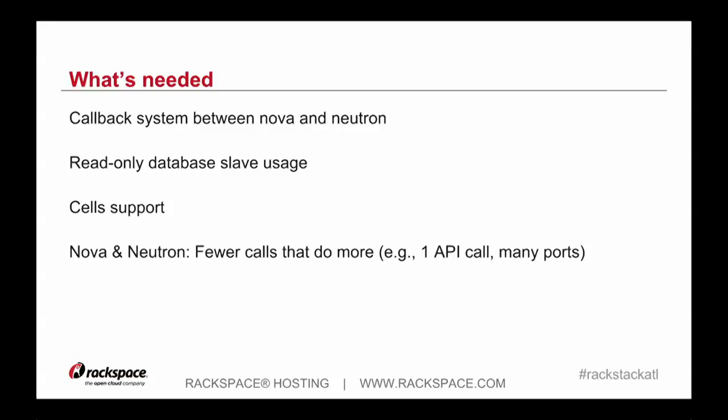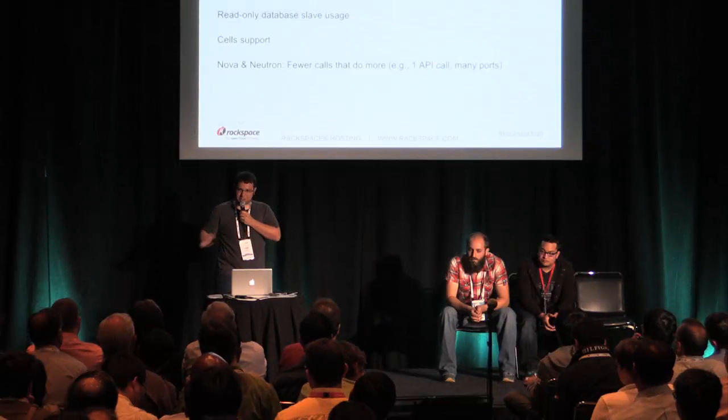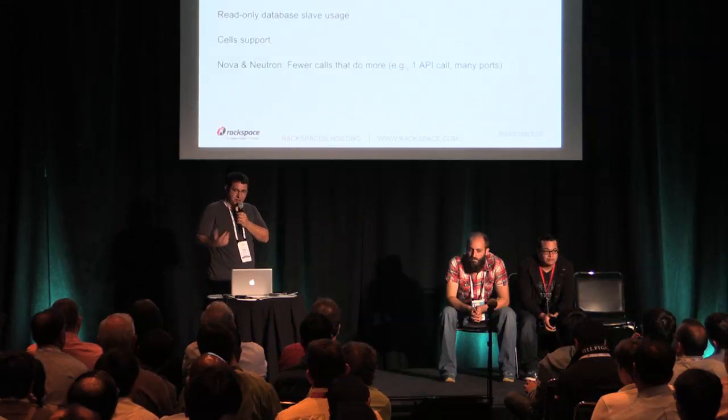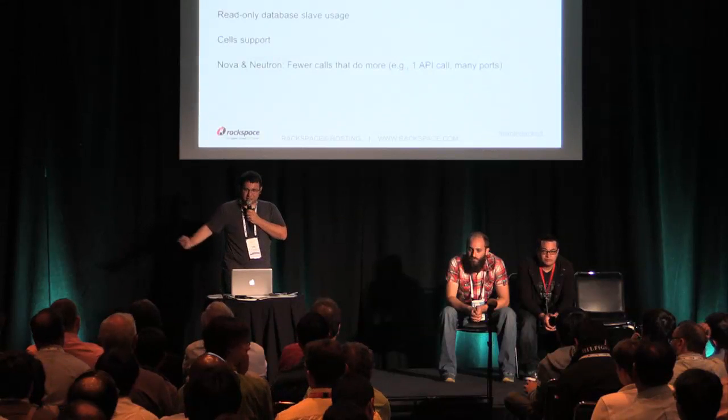The things we need as operators for Nova and Neutron to work at our scale: first, a callback system — the periodic update just didn't really work for us at the scale we're at. We'd also enjoy benefits of having a read-only slave for some read-only calls. And Neutron does work with cells, but cells isn't native to Neutron. We only have one collection of Neutron workers; we don't have a collection per cell. We would really like to see cells and Neutron work together so we can segment a lot of this load.